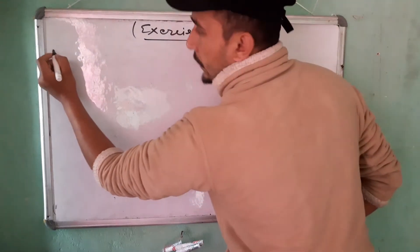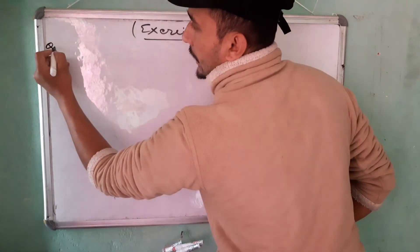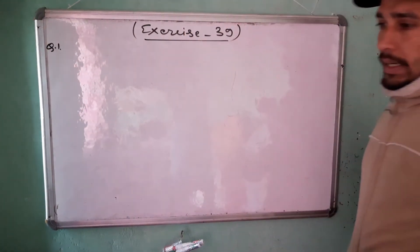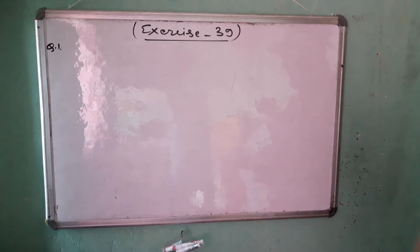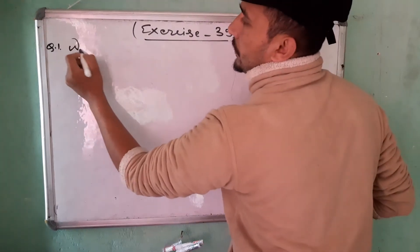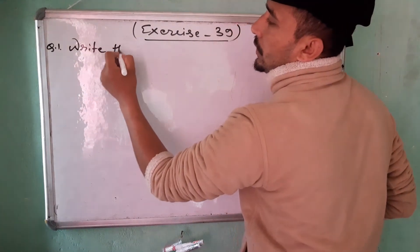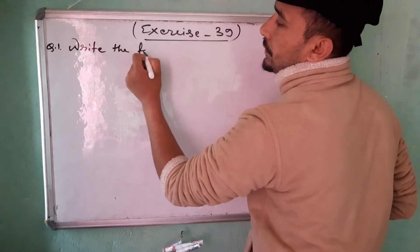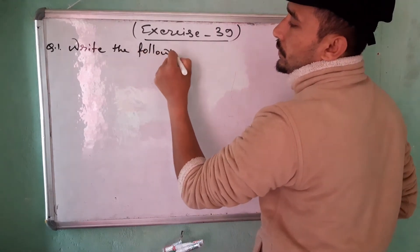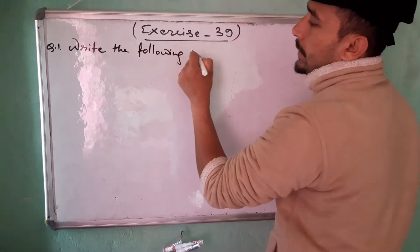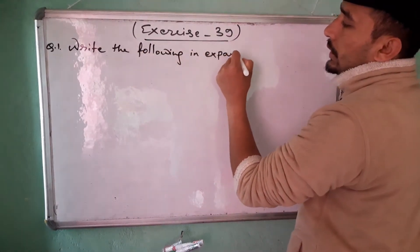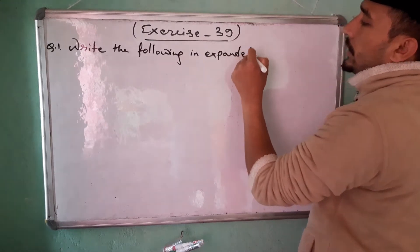Exercise 39, question number 1 is: write the following in expanded form.